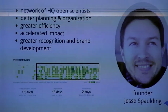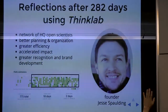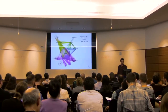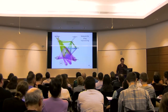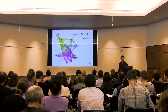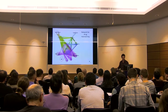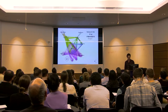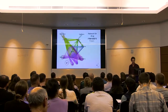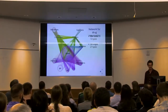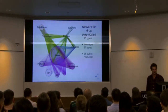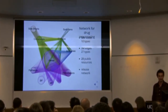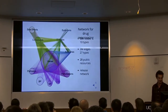The founder, Jesse Spaulding, is in attendance — raise your hand so you can speak to him if you're interested in putting projects up there. The project I'm working on is creating a network for drug repurposing. It has 50,000 nodes of 10 different types and 3 million edges, drawn from 28 different public resources. Because we're into open science, we want to release the network so other people can use it.